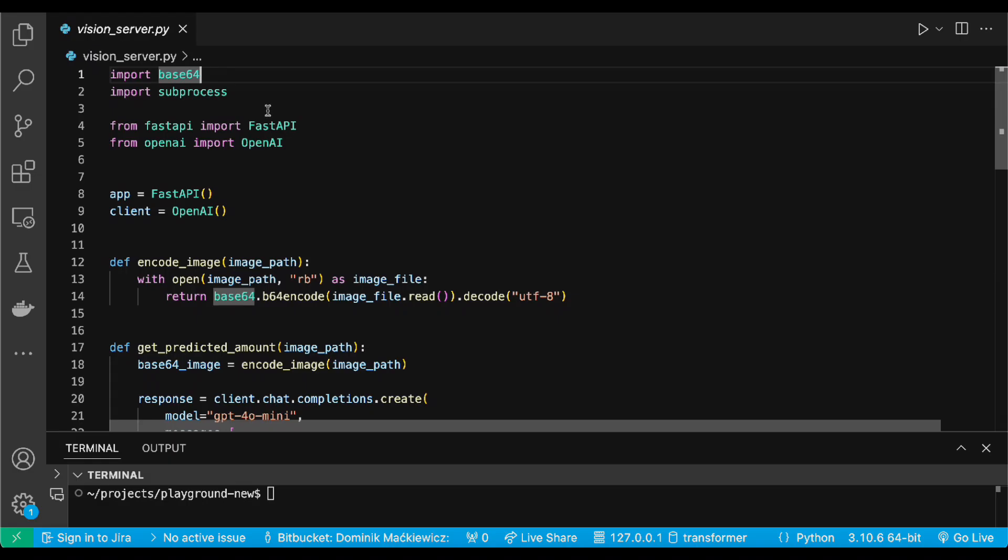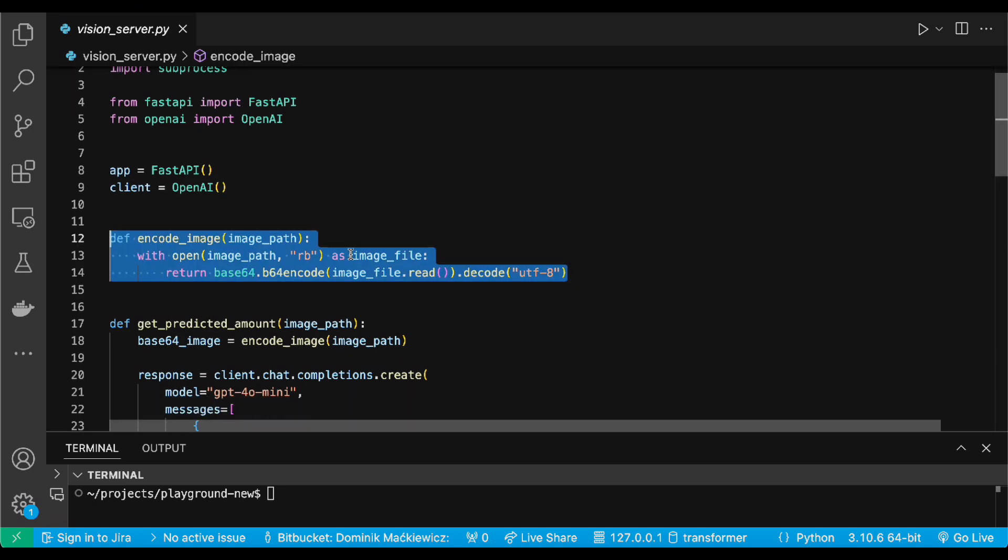And now my favorite part, technical details. First, let's go through server script. It's pretty easy. I initialized FastAPI application and OpenAI Client. Here I have utility function to encode the image to base64 format. That's because GPT is expecting base64 format.